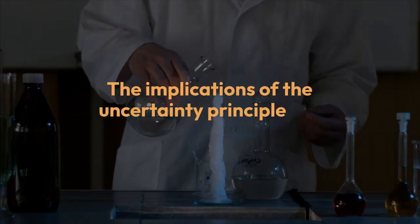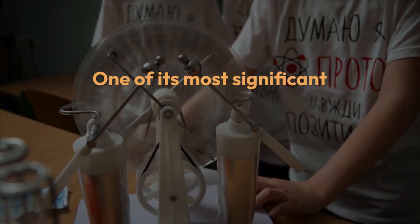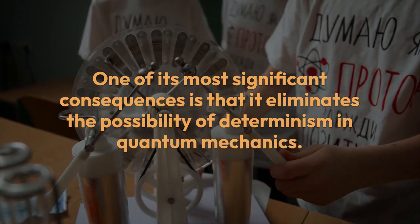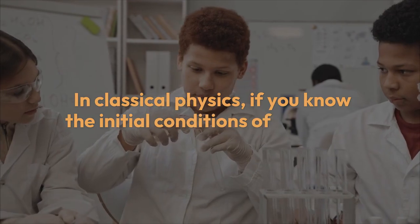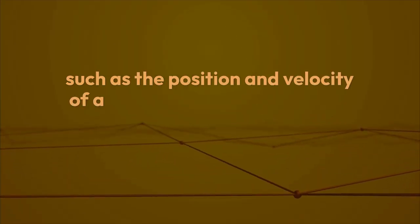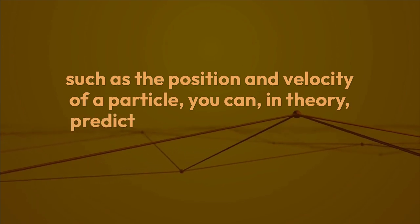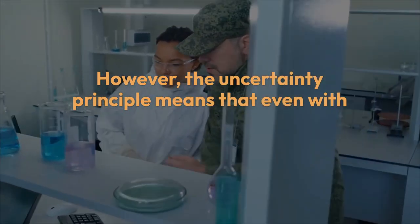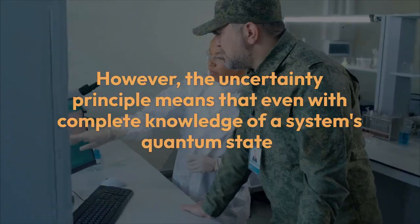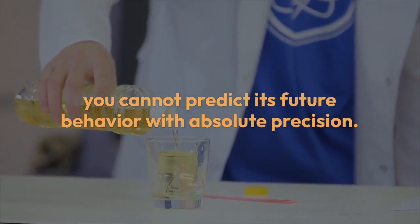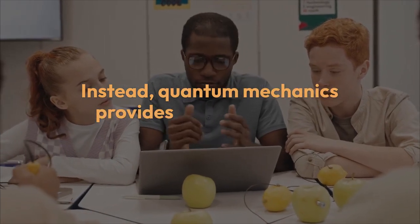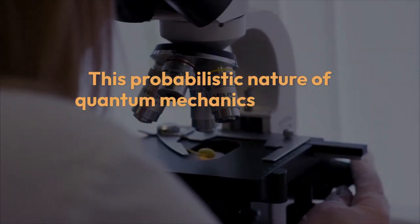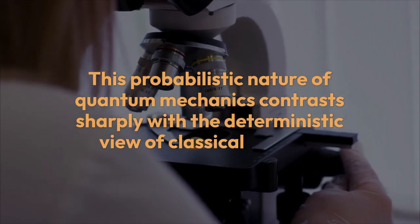The implications of the uncertainty principle are far-reaching. One of its most significant consequences is that it eliminates the possibility of determinism in quantum mechanics. In classical physics, if you know the initial conditions of a system, such as the position and velocity of a particle, you can, in theory, predict its future behavior with absolute certainty. However, the uncertainty principle means that even with complete knowledge of a system's quantum state, you cannot predict its future behavior with absolute precision. Instead, quantum mechanics provides only probabilities for different outcomes. This probabilistic nature of quantum mechanics contrasts sharply with the deterministic view of classical physics.